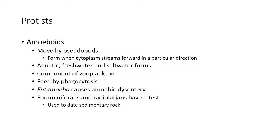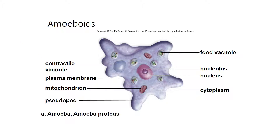Amoeboids move by pseudopods — pseudopod means false foot. It's basically like the blob: the cytoplasm streams forward in a certain direction to help it find food or move around. You can find them in fresh water or salt water, and they feed by surrounding prey and trapping it like phagocytosis. Some types of amoebas can cause dysentery — the Entamoeba. There's also Naegleria fowleri, which is a brain-eating amoeba. This is a picture of a general amoeboid; its pseudopod helps it move around, and it has a nucleus, vacuoles, plasma membrane, and cytoplasm.